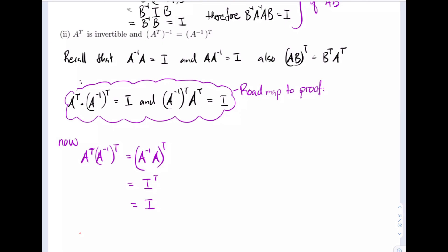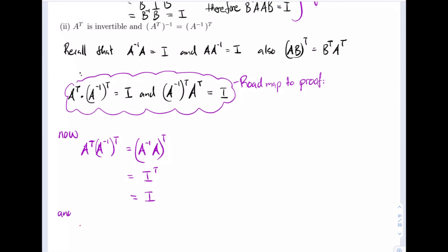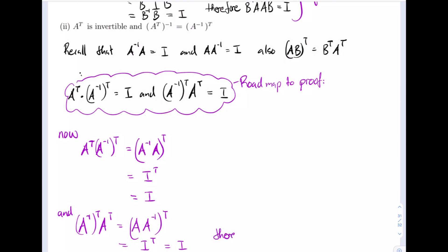We have proven one part. For the second side: A inverse transpose times A transpose equals the transpose of A times A inverse, which equals I transpose, which equals I. Therefore A inverse transpose is the inverse of A transpose.